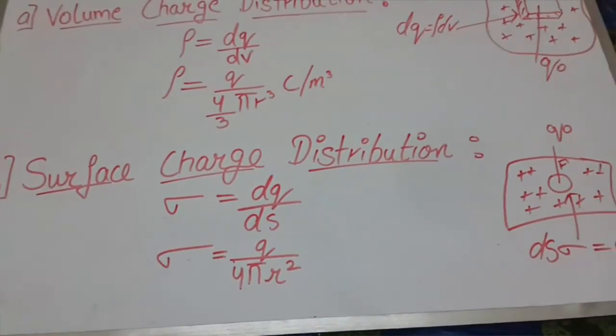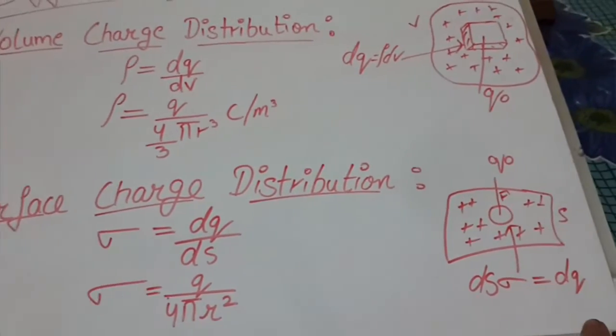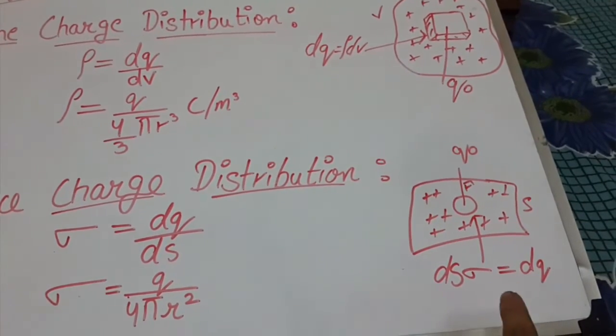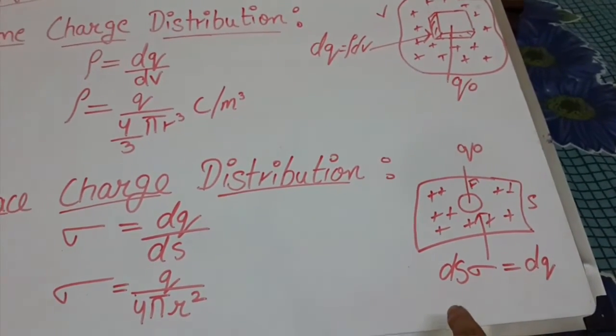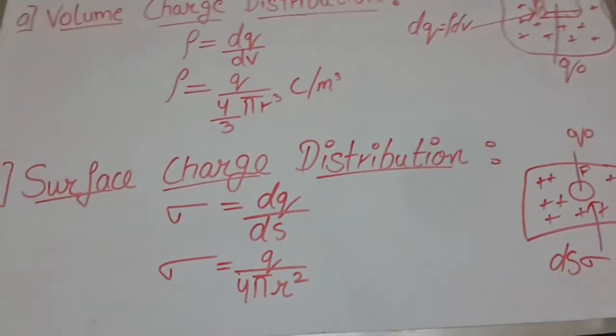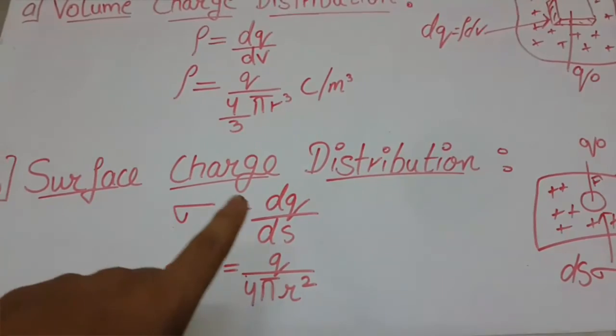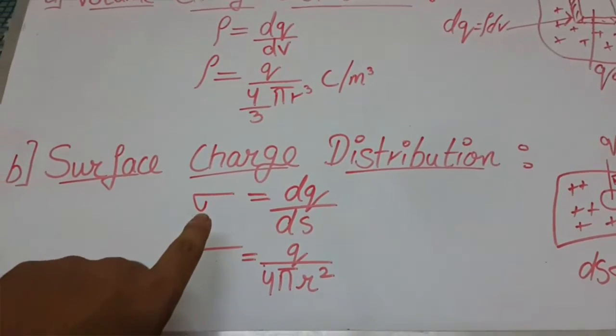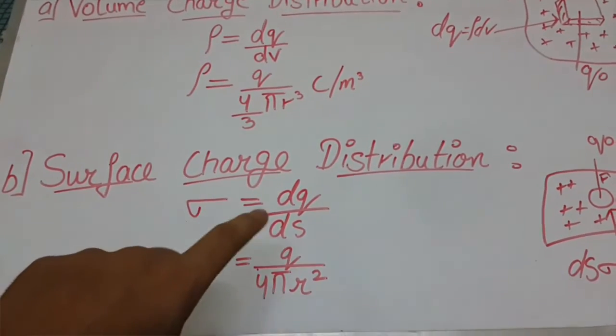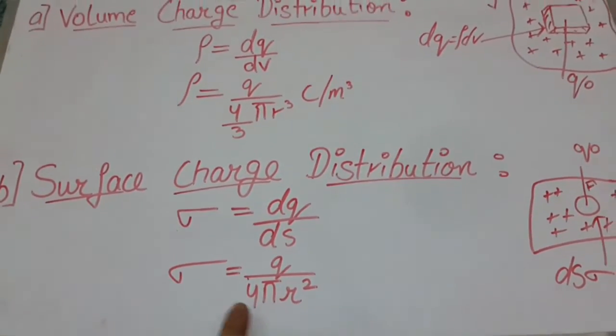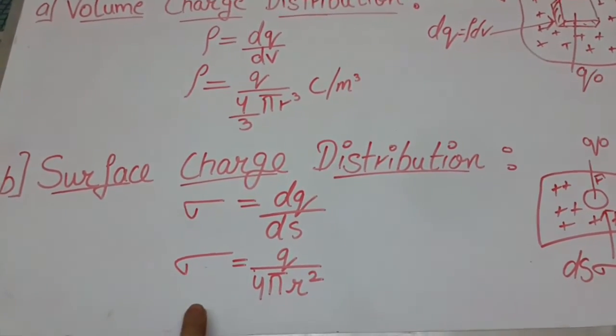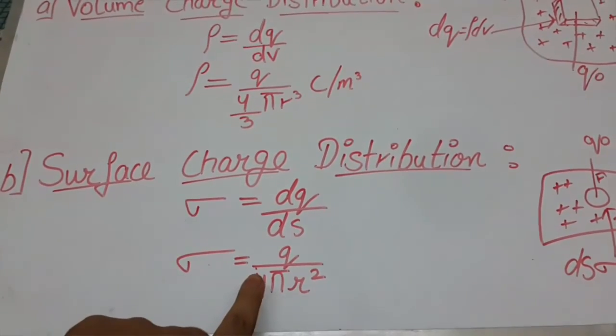The second type is surface charge distribution. Here ds is the charge distributed in the ds surface area and q0 is a single point charge. Here the surface charge density is denoted by sigma. This surface charge density is defined as charge per unit surface area. By putting the value of surface area of a sphere we can get that sigma is equal to q upon 4 pi r square.